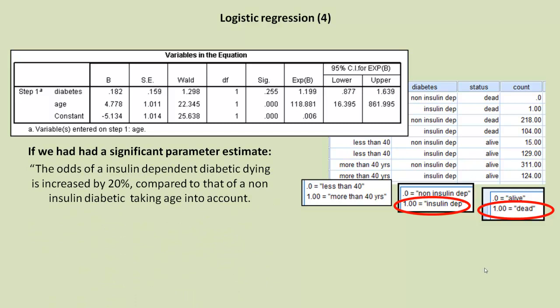Assuming that it was significant, that is, it was lower than our critical value which we usually set at 0.05, so it was something like 0.002 or what have you, then we could have said that the odds of an insulin-dependent diabetic dying is increased by 20% compared to that of a non-insulin diabetic taking age into account. So we get that 20% from the 1.199.